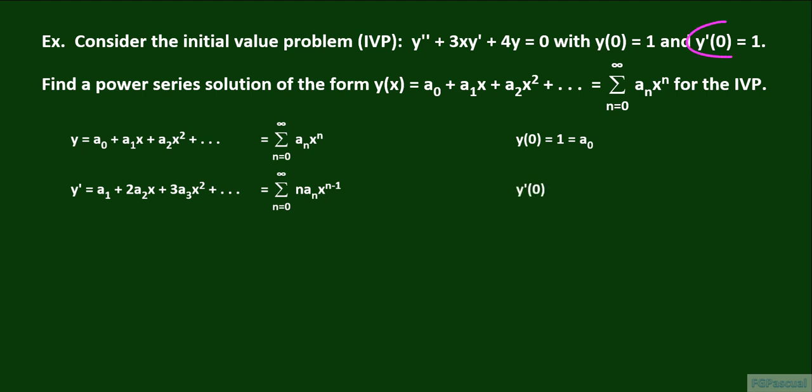We check the initial condition y prime of 0 equals 1 by plugging x equals 0 into the series for y prime. All terms except for a sub 1 disappear, and so a sub 1 is equal to 1.